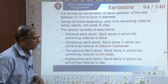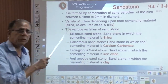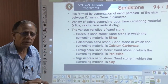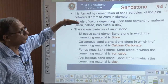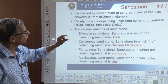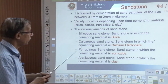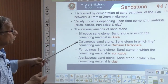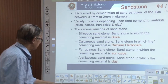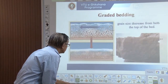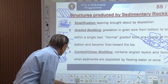Let us go ahead one by one. Sandstone, in the Wentworth scale just now we have presented from fine sand to coarse sand. Sandstone is a type of rock formed by particles in that range. That is just now we have discussed the Wentworth classification.